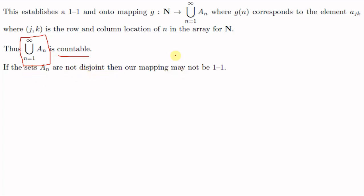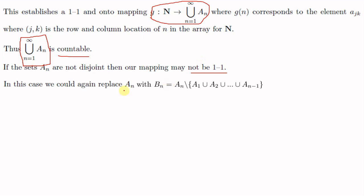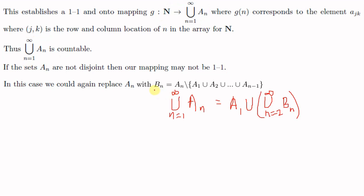Now we consider the case where the An's are not disjoint. The mapping g from ℕ to ⋃An may not be one-to-one because elements in different An's might coincide. In this case we replace An with Bn, defined as Bn = An \ (A1 ∪ A2 ∪ ... ∪ An−1). So B2 = A2 \ A1, B3 = A3 \ (A1 ∪ A2), B4 = A4 \ (A1 ∪ A2 ∪ A3), and so on. Each Bn is disjoint from the others.